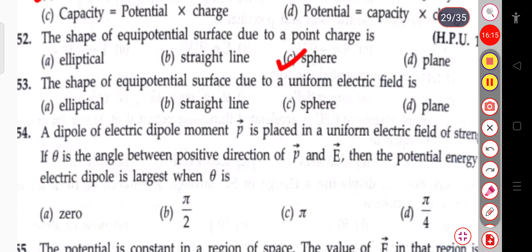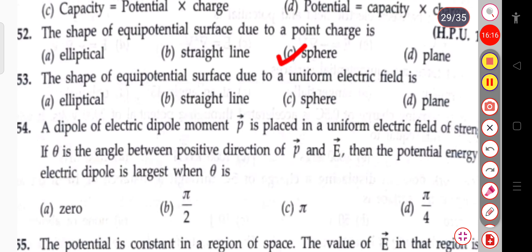The next question: the shape of the equipotential surface due to a uniform electric field. In the case of a uniform electric field, the equipotential surface is a plane, whereas for a point charge it is a sphere.